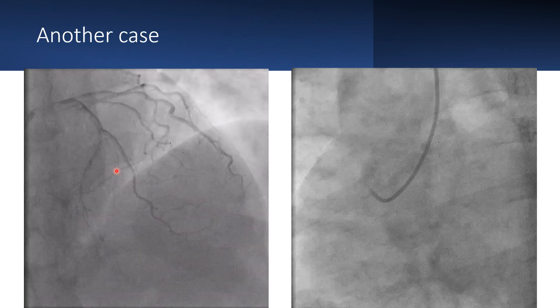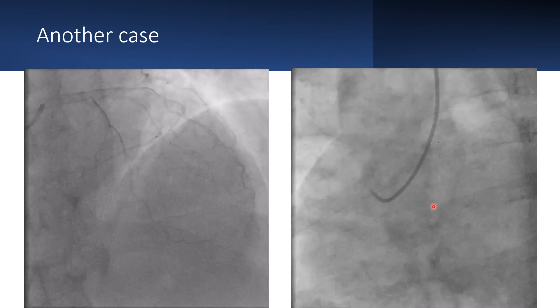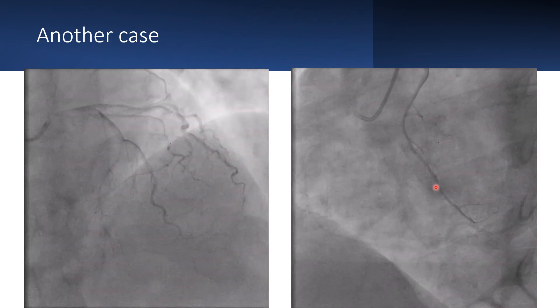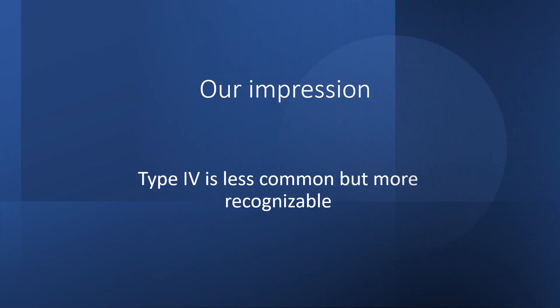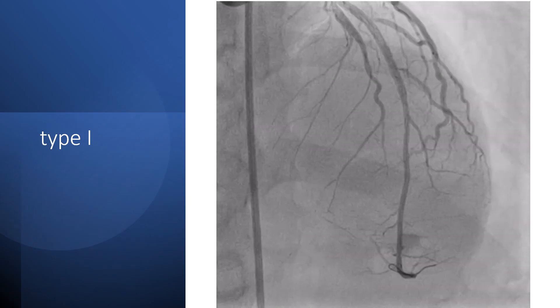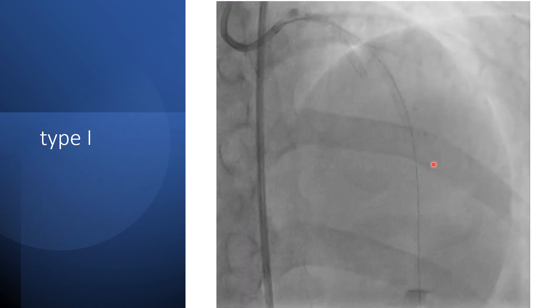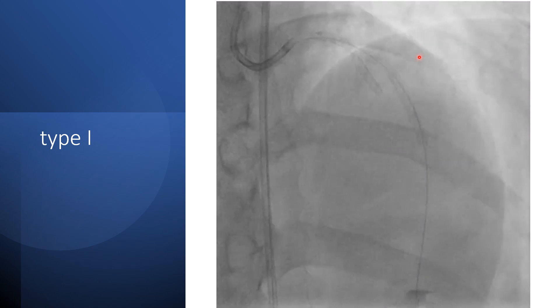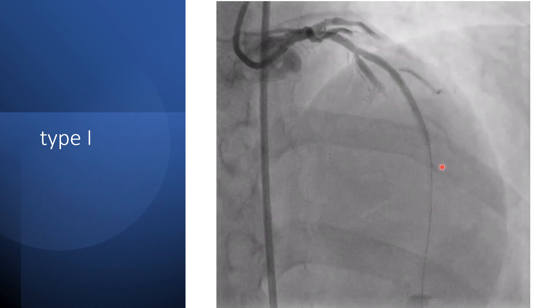This is another case: this is the short LAD, and the long LAD is arising from the RCA and then running into the interventricular groove. Our impression is that type four is less common but more recognizable. This is a type one dual LAD, where the long LAD runs from left to right across the left interventricular groove, while the short LAD runs in the normal course.